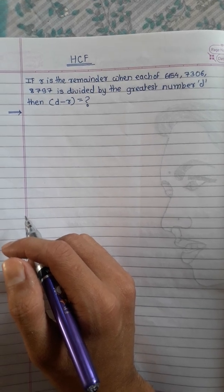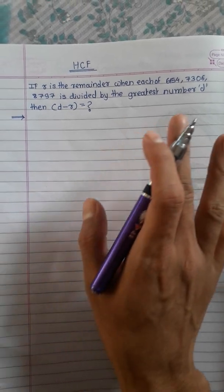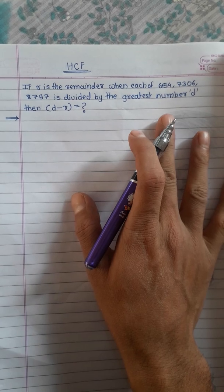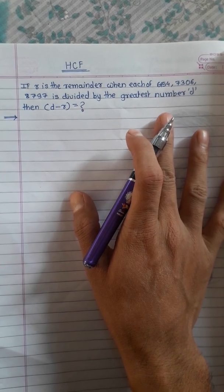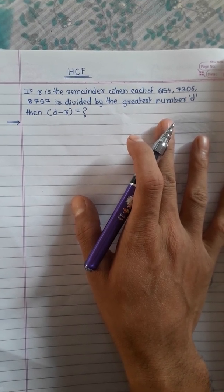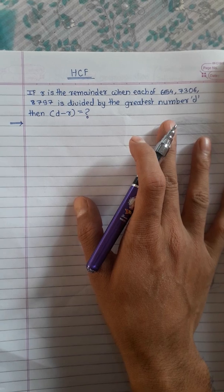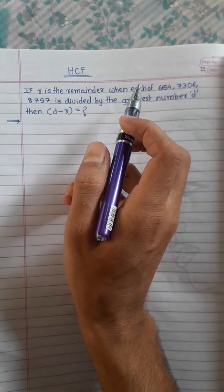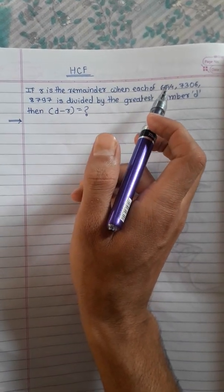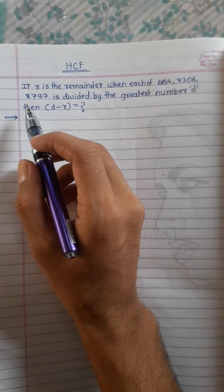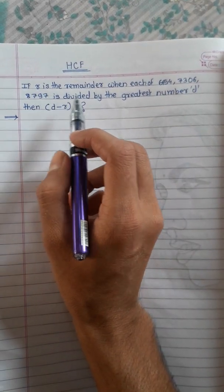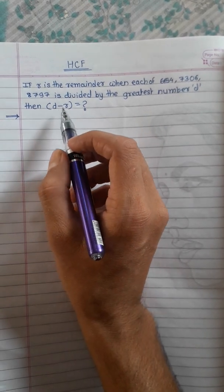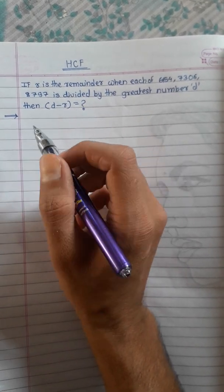Hello my dear students, we will solve this question. This is a previous year asked question in CPO. It is a very nice concept to understand. Here, what is the remainder when each of 6454, 7306, 8797 is divided by the greatest number D? Then we want to calculate D minus R.